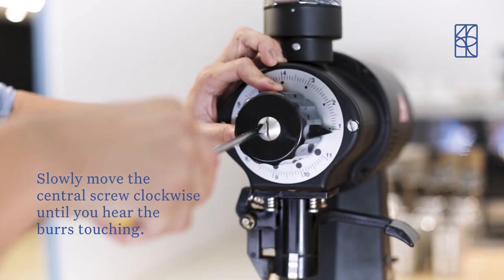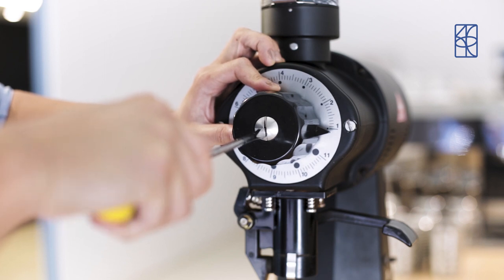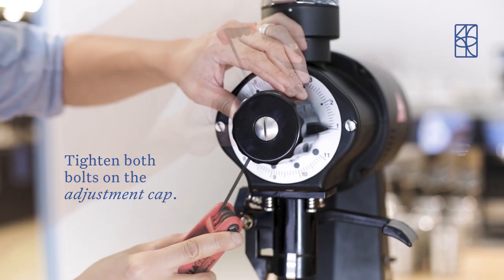Now using a flat head screwdriver, slowly move the central screw clockwise until you hear the burrs touching. Turn off the grinder and tighten both bolts on the adjustment cap.